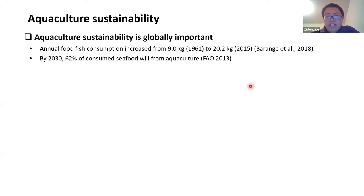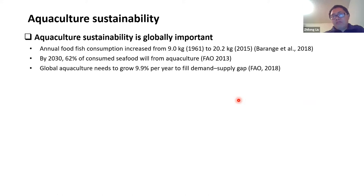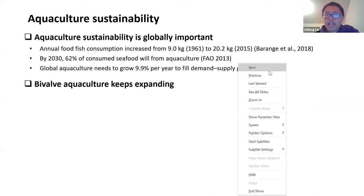By 2030, 62% of seafood will need to come from aquaculture. However, the current annual growth rate is only 4%, meaning aquaculture growth meets only about 40% of demand. Among all aquaculture types — fish and shellfish — this talk mainly focuses on shellfish culture, which has been steadily increasing over past decades. In 2019, global total shellfish production reached 17.5 million tons, and oyster aquaculture is the dominant resource, accounting for more than one-third of total production.